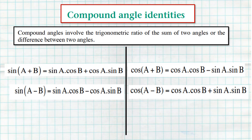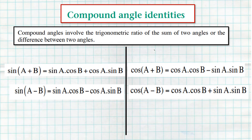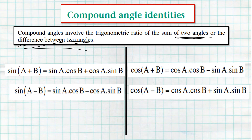Compound angles simply involve trigonometric ratios — sine, cos, and tan — of the sum of two angles or the difference between two angles. That is, they are either summing up two angles or subtracting two angles. Today we'll focus on the compound angle formulas for sine and cosine.